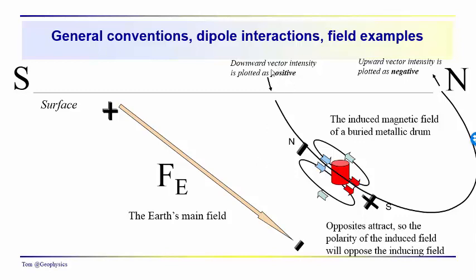We have some additional points. When we look at the vector intensity that we measure, downward pointing vectors are considered to be positive, and the upward pointing vectors are considered to be negative.